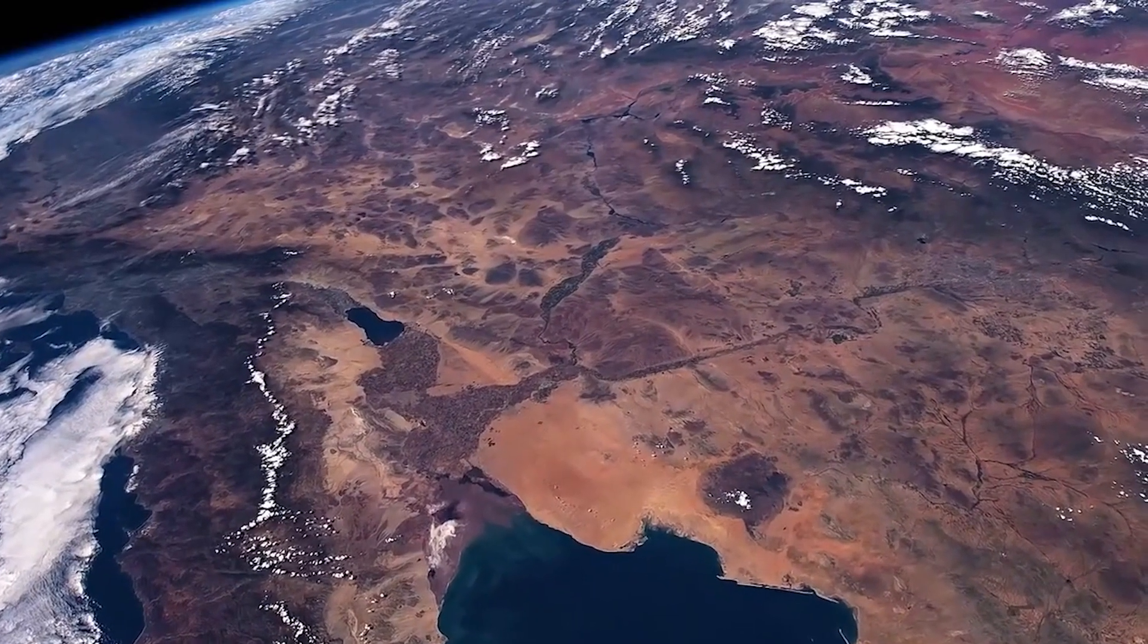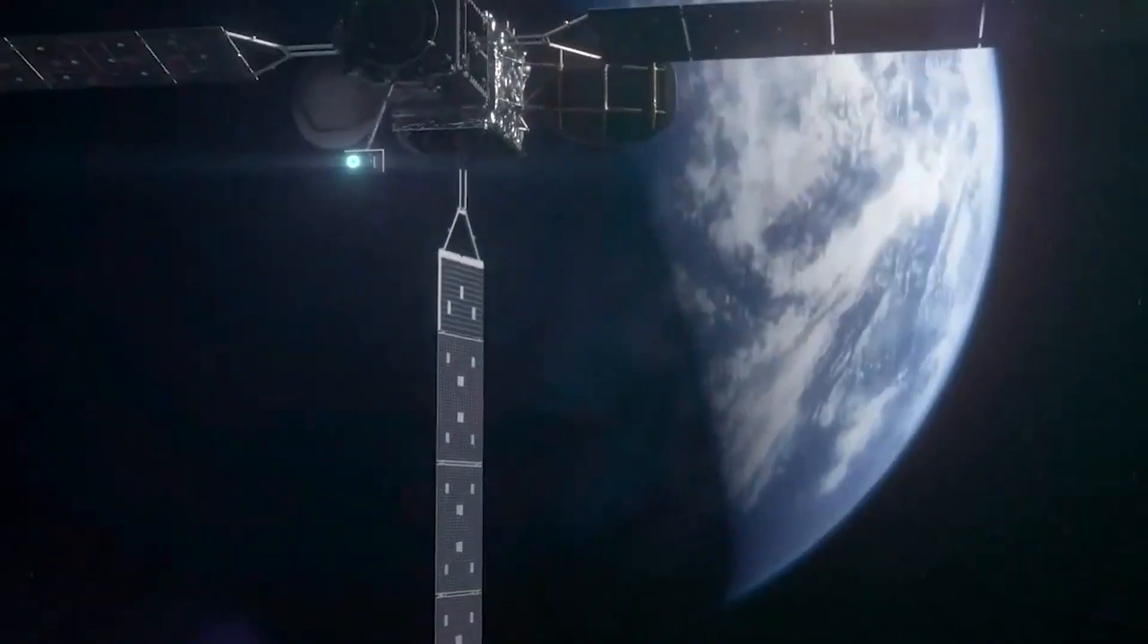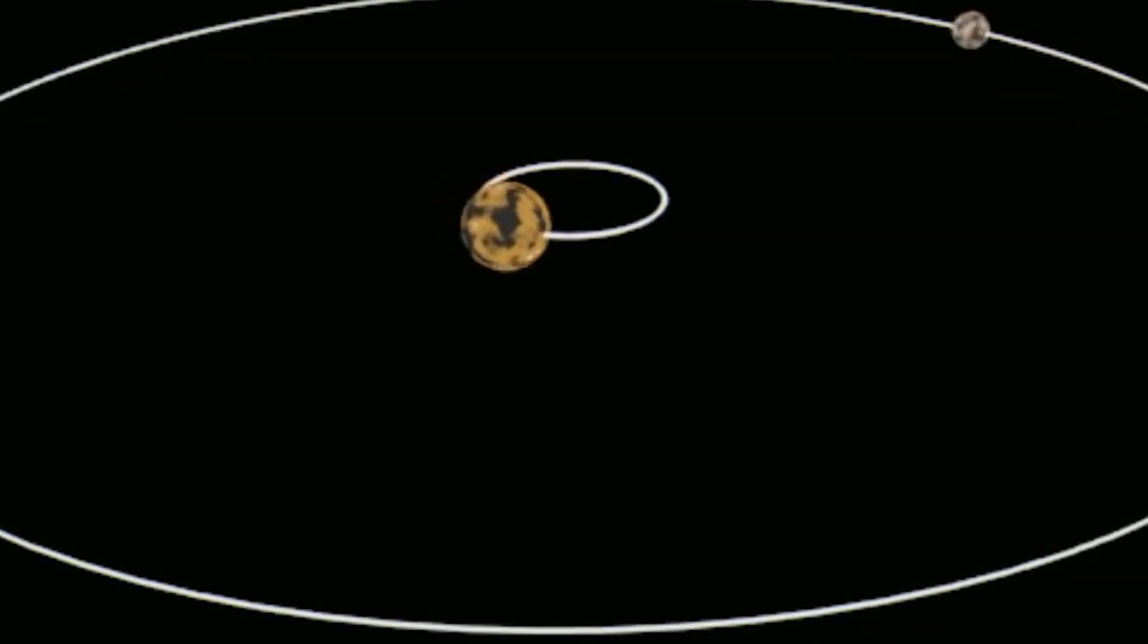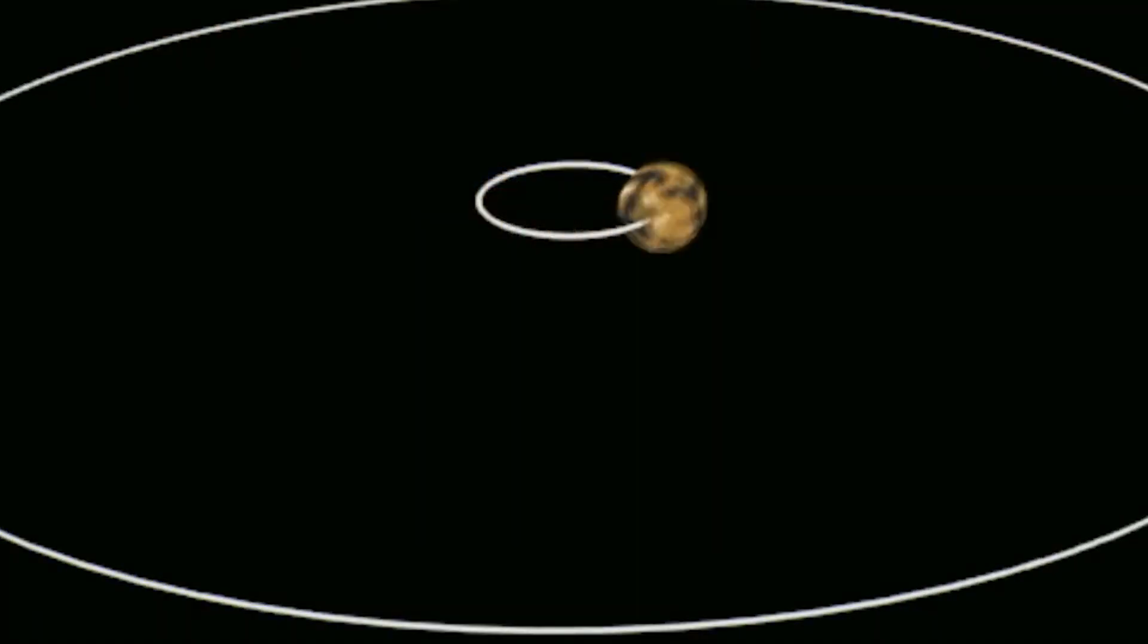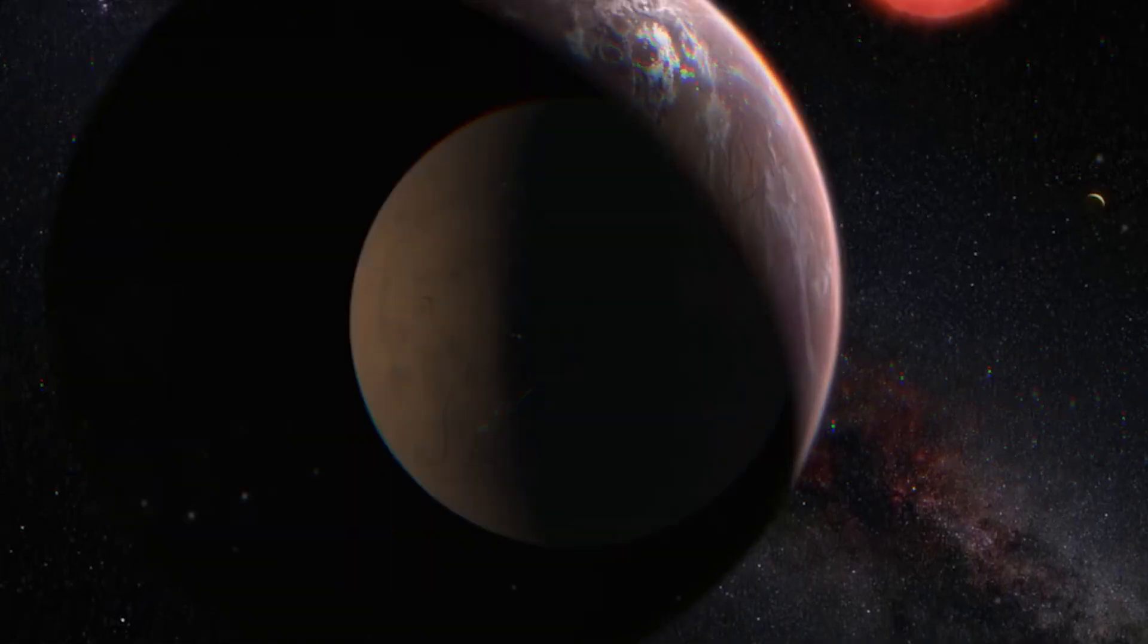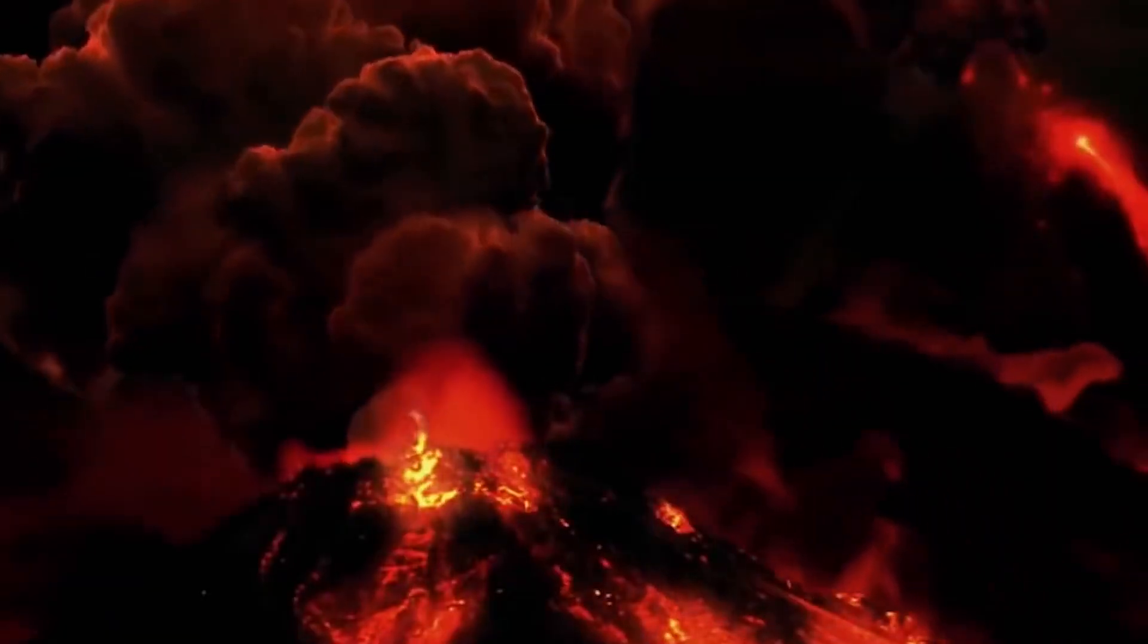The planet's location in the star's habitable zone is the most intriguing aspect of this discovery. The Alpha Centauri system's Proxima b planet orbits the Proxima Centauri star. Three stars, Alpha Centauri A, B, and C, together known as Proxima Centauri, make up the triple star system known as Alpha Centauri.